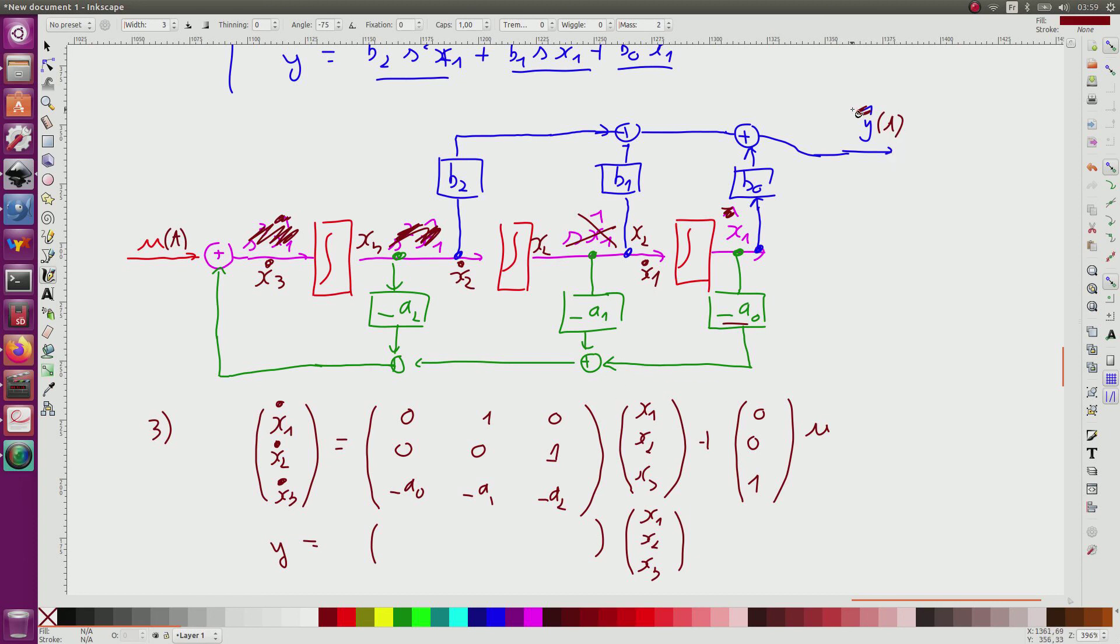Concerning y, I have y which is a linear combination of x1, x2, x3, and I will have b0, b1, b2. So this corresponds to the state equation corresponding to this.